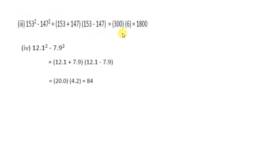Last is 12.1² - 7.9². In A + B we have 12.1 + 7.9, and in A - B we have 12.1 - 7.9. Adding gives 20. Subtracting, we take 1 carry, 11 minus 9 gives 2, and 11 minus 7 gives 4, so we get 4.2. Now multiply these to get the answer 84. That's all, thank you.